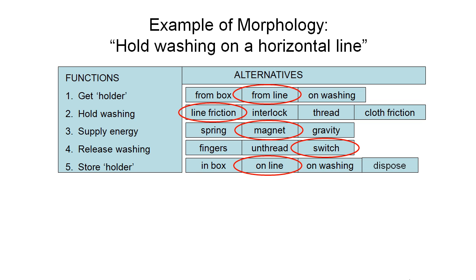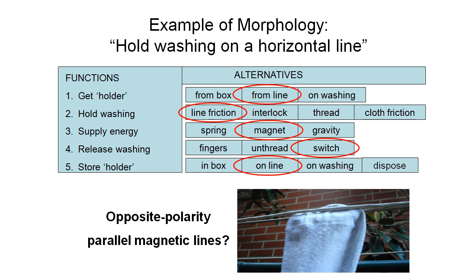If we're supplying energy from magnets and releasing via a switch, the easiest way to do that would be using electromagnetics — generating the magnetic field via the flow of electricity. We're using line friction to keep it on the line. Something like this would look like opposite-polarity parallel magnetic lines. When an electric current runs through them, each line is polarized differently so they're attracted to each other, and maybe there's a slight spiral. We put the washing between the two lines, flick the switch to start up the magnetic field, and then the lines are drawn together strongly, holding the washing in place.